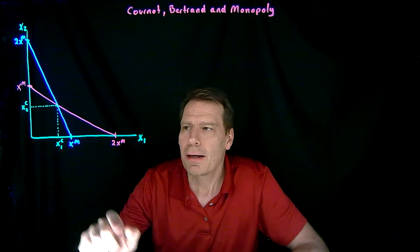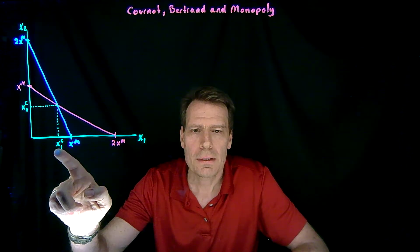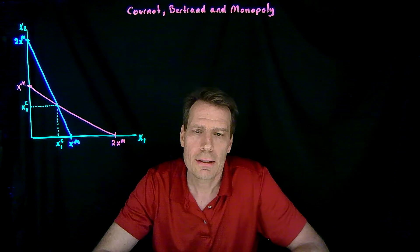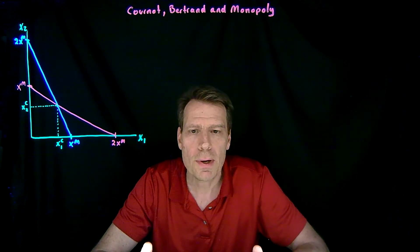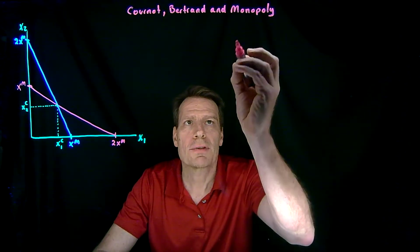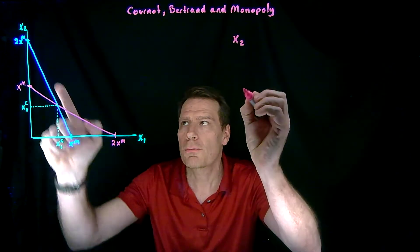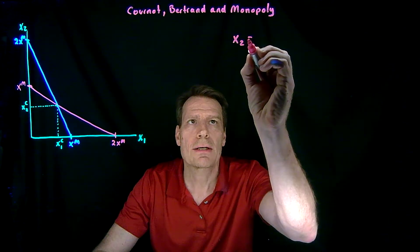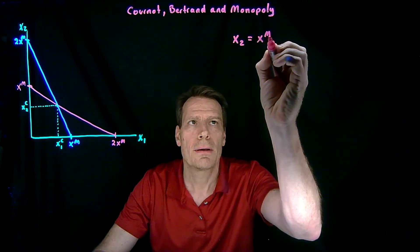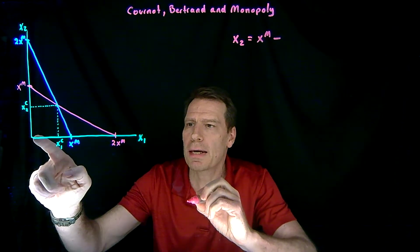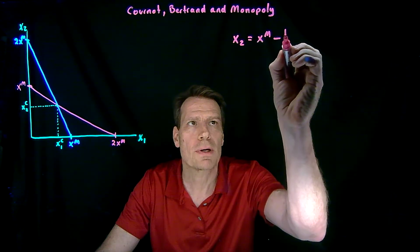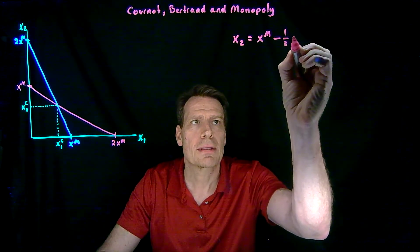We can now ask, can we actually calculate what this quantity is? We have two lines that are intersecting, and it's pretty easy to figure out what the equations for those lines are. For the magenta line, we have an equation where x2, what's on the vertical axis, is equal to a vertical intercept of xm minus a slope. We go down by xm and over by 2xm, so that's a slope of minus 1 half, times x1.